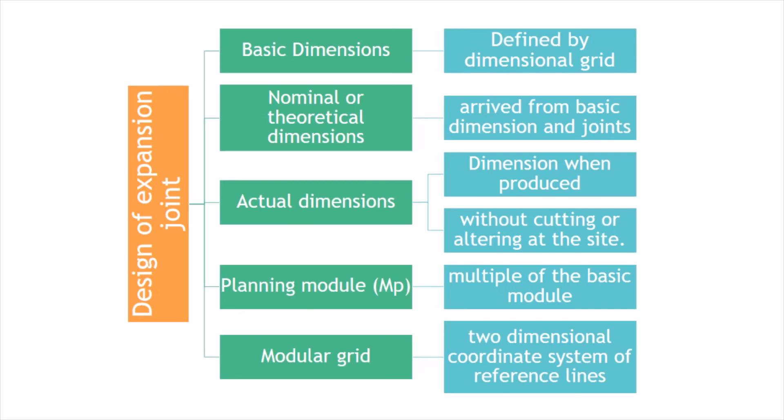Modular grid is a two-dimensional coordinate system of reference lines. The multi-module may be the same or different for each of the two dimensions of the reference system, and the area between the modular lines is called the modular space. Following these procedures under the design of expansion joints makes design easier, eliminates unwanted choices, limits variance, simplifies manufacturing, erection, and completion processes, and allows use of specialized documents as required per site.